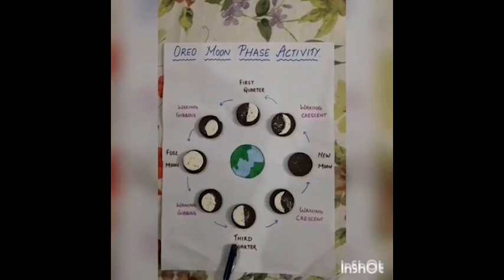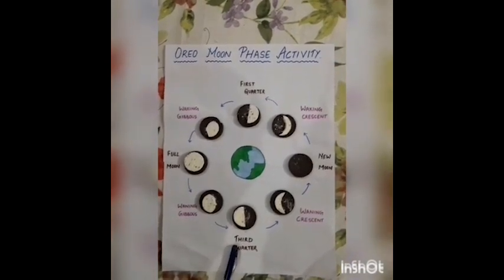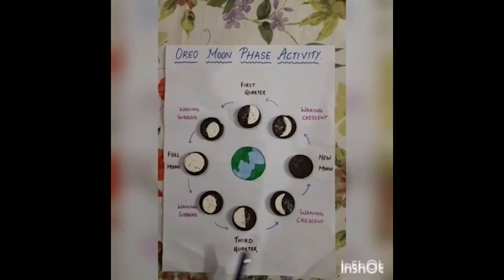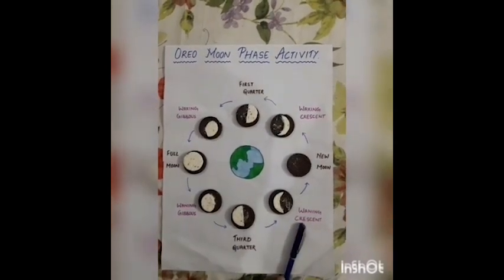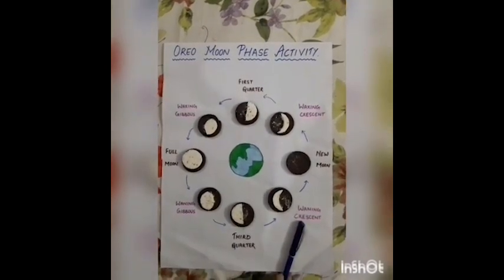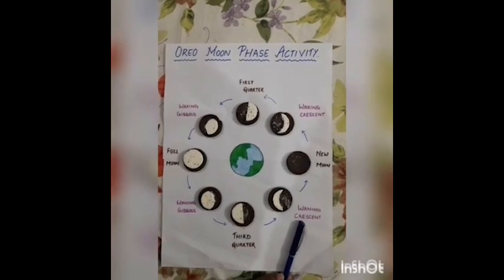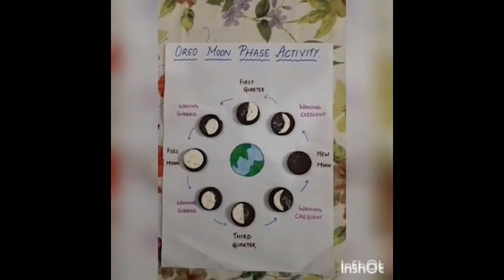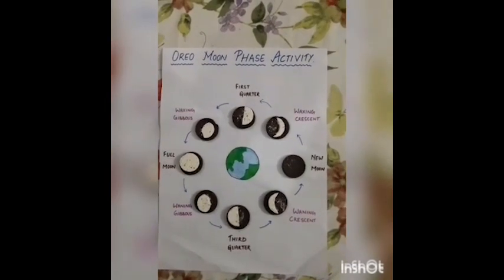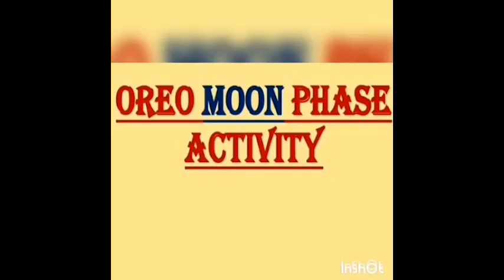Then is the third quarter, also known as the last quarter. The next phase is waning crescent — the moon will continue to shrink every night till it vanishes completely. Now, we will learn about some new words which you came across in the video.